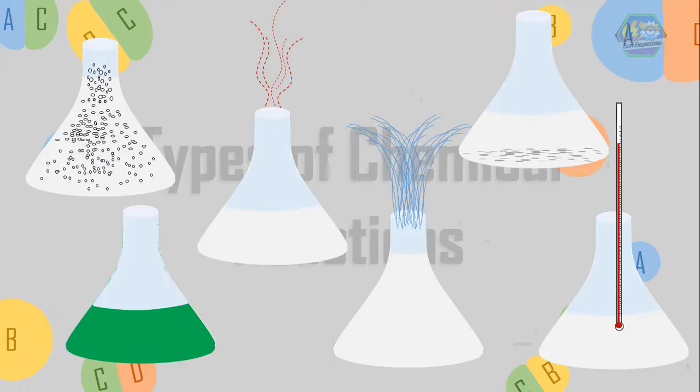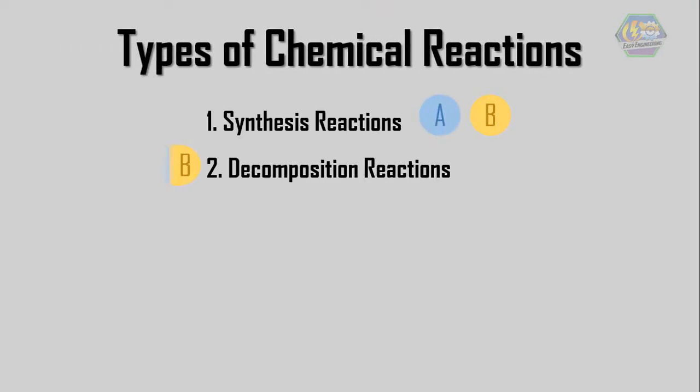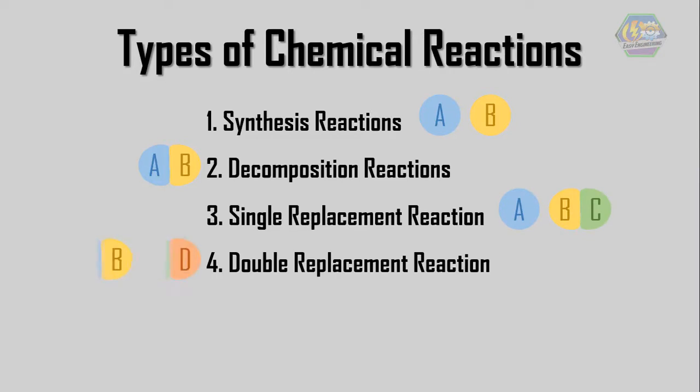If one of the phenomena mentioned is happening, then we can say that there is a chemical reaction that has happened. Now there are five types of chemical reactions. These are Synthesis, Decomposition, Single Replacement, Double Replacement, and Combustion.